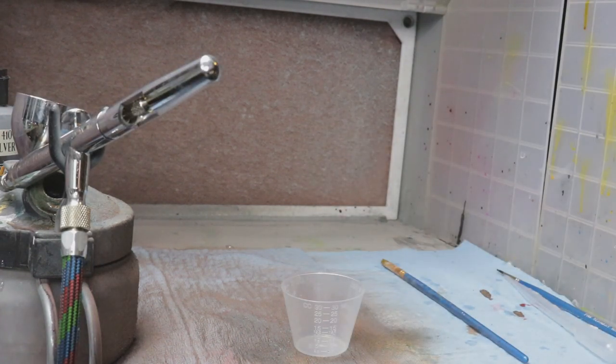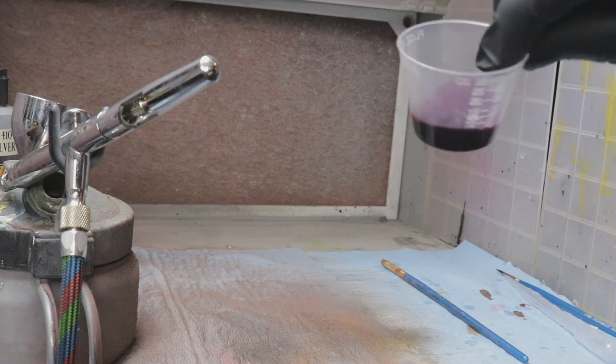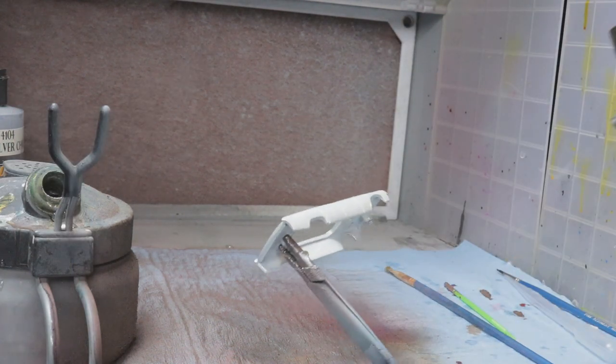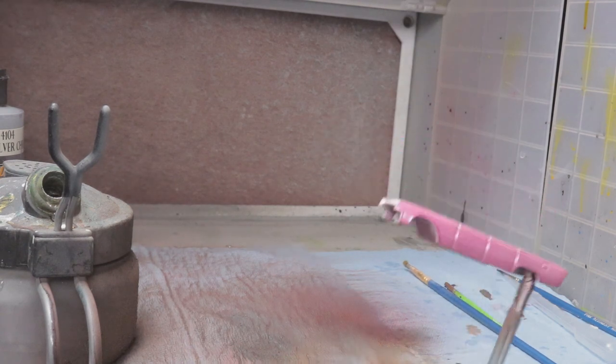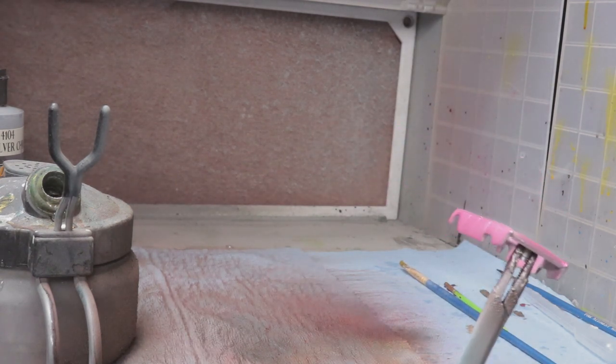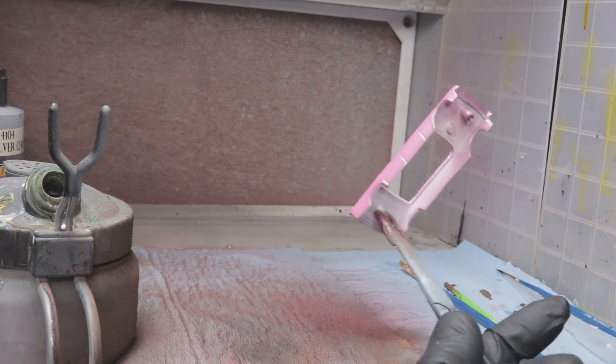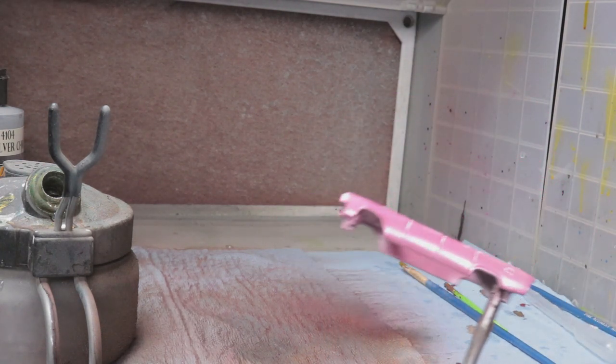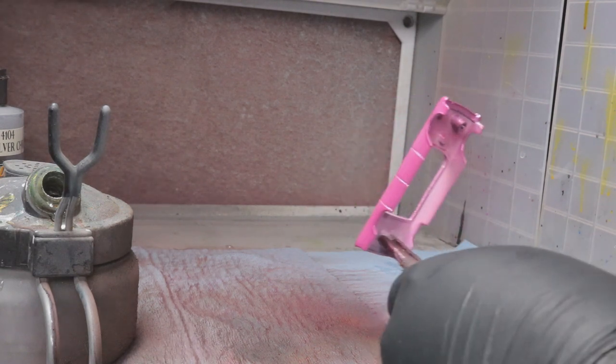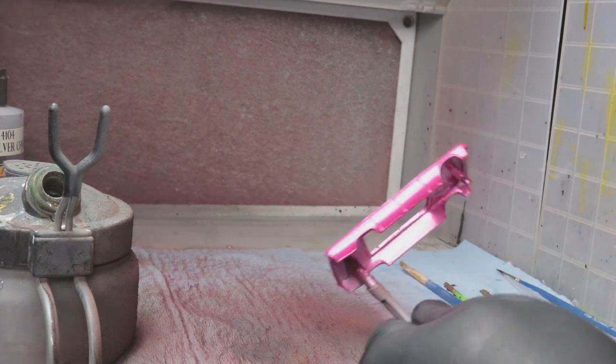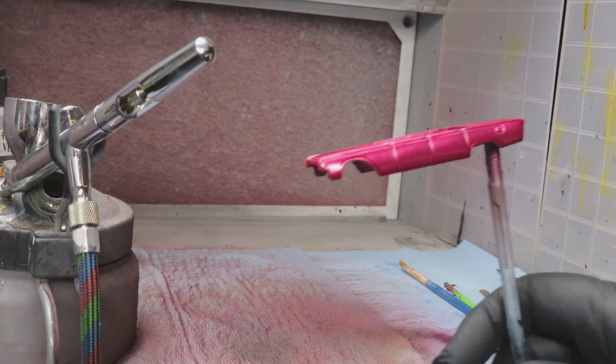All right, so I'm going to mix up our color for the whole body, Sunset Magenta. It's kind of like a dark purpley wine color. Okay, that looks like it's enough for now.